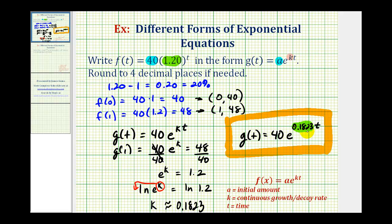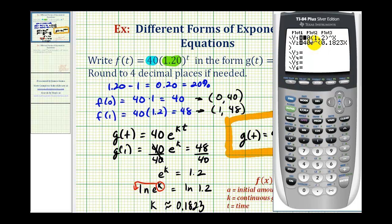Now to check our work, let's make sure the table of values for these two functions are equal to each other. We should be aware that we did have to round, so there might be a slight difference. I've already typed in both functions. Here's the given function in y1, and here's the exponential function we found in y2.